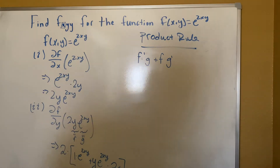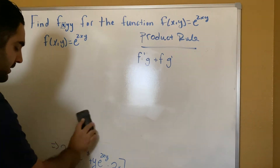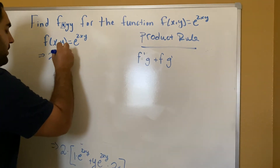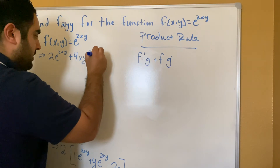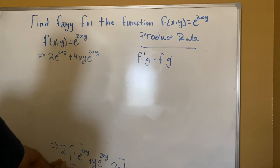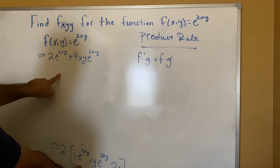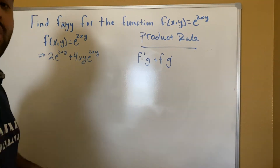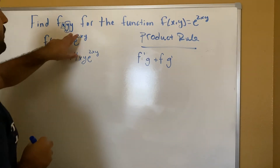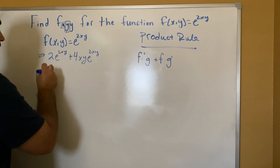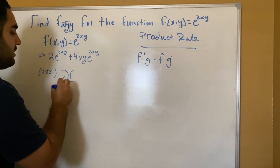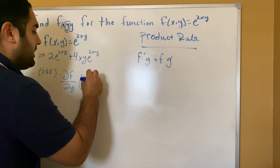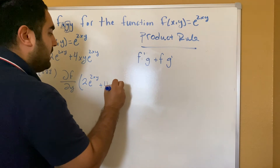Now I'm going to go ahead and simplify that a little bit, rewrite it, and distribute the 2 as well. Making sure everything is correct so I don't make a mistake in the next step. For our last one, we're going to go ahead and find our derivative in terms of y again. So we're going to find the partial of our function in terms of y once more, and now our function is 2e to the 2xy plus 4xy·e to the 2xy.